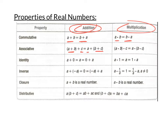Next is the identity property, which is not exactly the same for addition and multiplication. Addition's identity is zero — adding zero to something keeps everything the same. The identity is what keeps things the same. For multiplication, we multiply by one to keep a number the same. So the additive identity is zero, and the multiplicative identity is one.